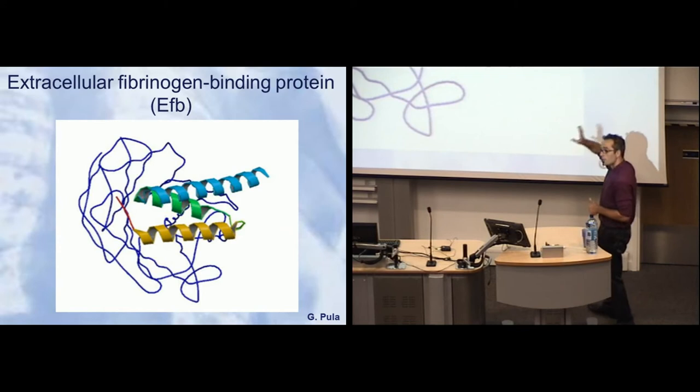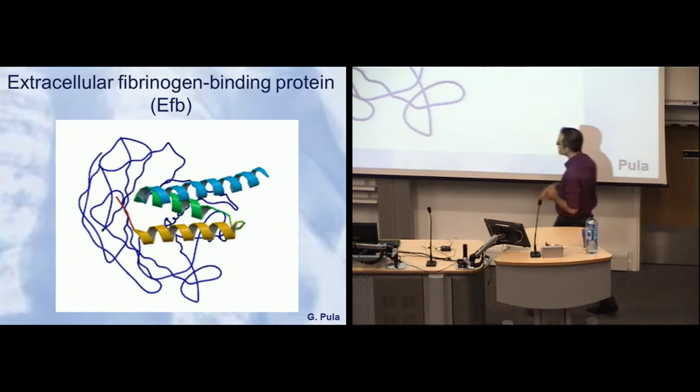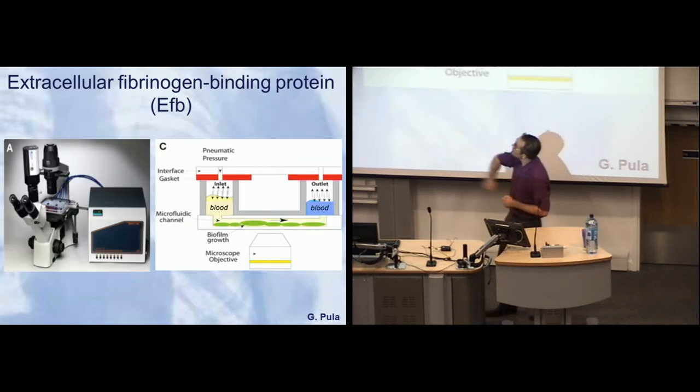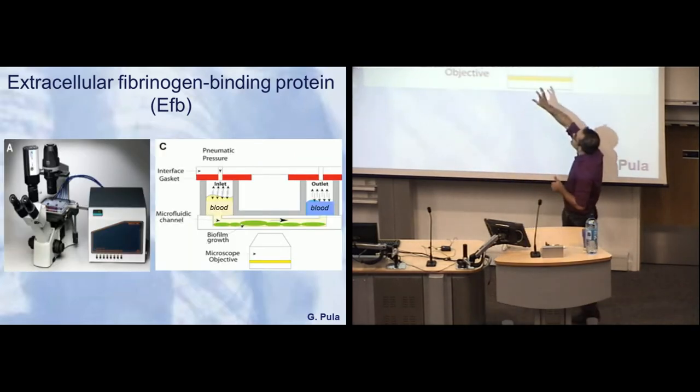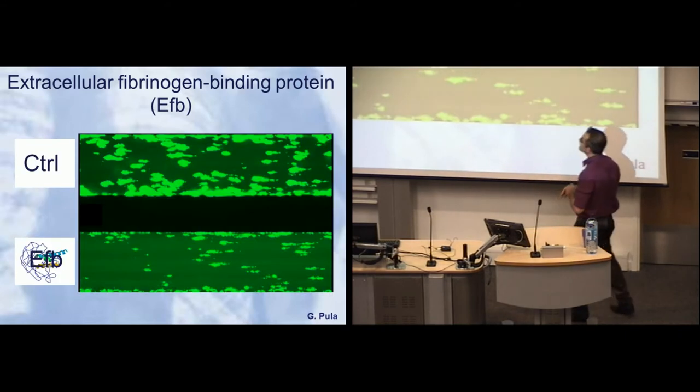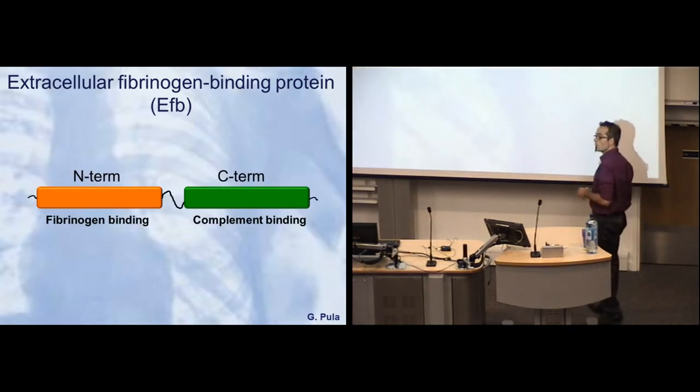We expressed it, isolated the protein, and tested it in our preferred experimental model of clot formation, which looks like that. What it does is we pump blood from one well to the other through a microvessel, and we look at it with a microscope. So we recreate a blood vessel in our experimental setup. Clots appear like those big blobs, fluorescently labeled. That is what happens with normal blood. When we add Efb to the blood, we highly reduce the formation of clots. So yes, Efb works.